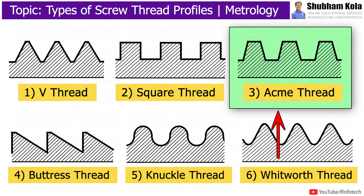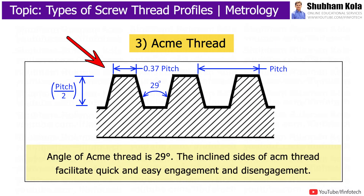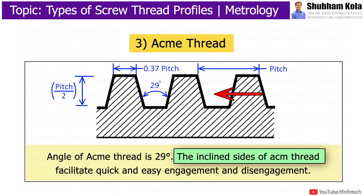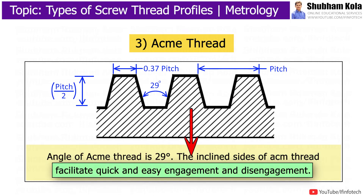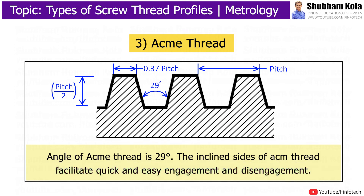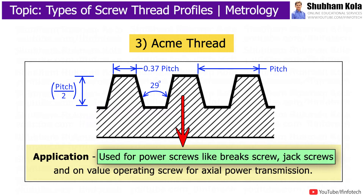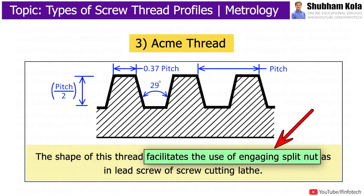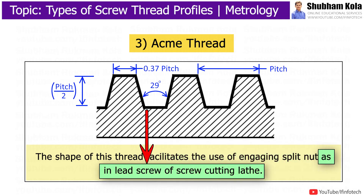Next is Acme thread, which is a modified form of square thread where the angle of the thread is 29 degrees. The inclined sides of Acme thread facilitate quick and easy engagement and disengagement. It is easier to cut and these threads are stronger at the root. Acme thread is used for power screws like brake screw and jack screw. The shape of Acme thread facilitates the use of an engaging split nut, as in the lead screw of a screw cutting lathe.